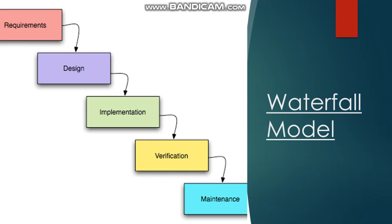When such changes come in, if an IT industry is following the waterfall model, they will start making these changes again from the initial phases. They will not start randomly from the coding phase — they'll start from the requirement phase, then move to design, then coding, then verification, then maintenance. It is the simplest model out of all six known models.